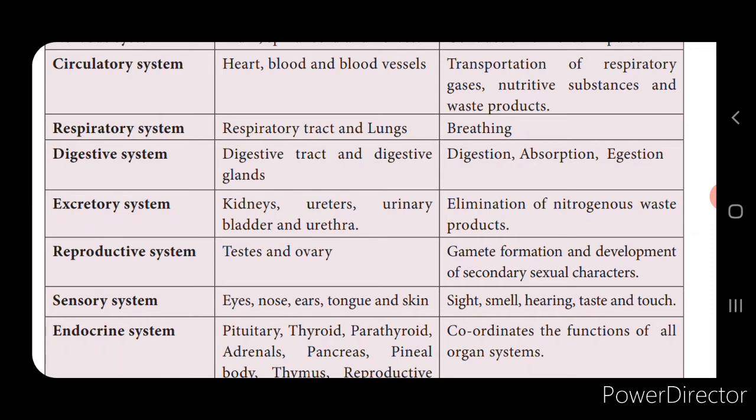The endocrine glands include the pituitary gland, thyroid gland, parathyroid gland, adrenal gland, pancreas, thymus, and reproductive glands. The function of the endocrine system is to coordinate the functions of all the organ systems, since secretion of hormones is the main function of these endocrine glands.